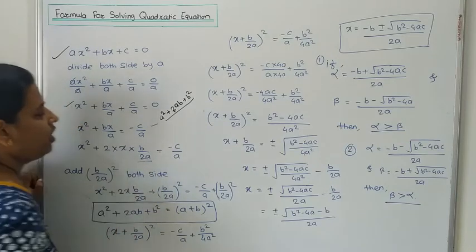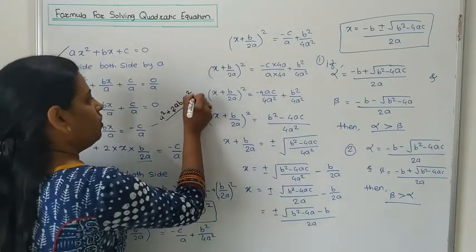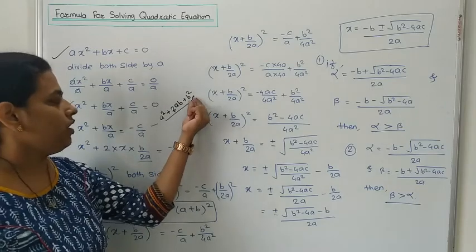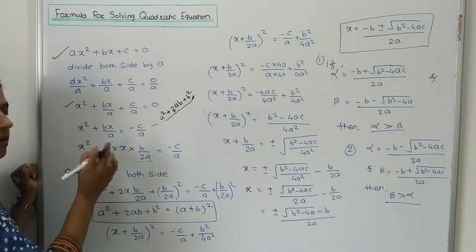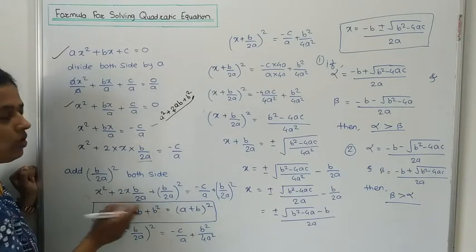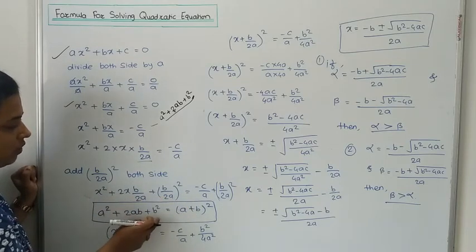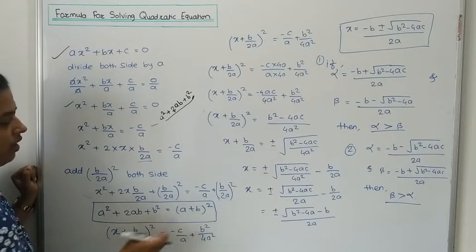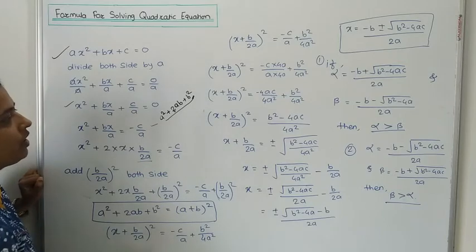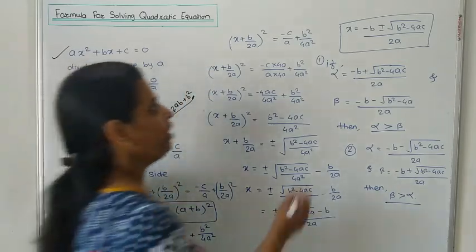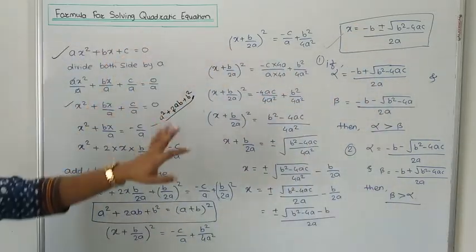There is no B² term, so we add (B/2A)² to both sides of the equation. Then we compare with the identity A² + 2AB + B² = (A+B)² and write it as (A+B)². After solving all these steps, we finally get the formula for solving the quadratic equation.